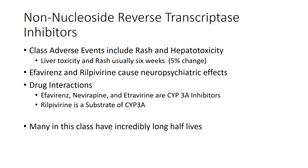As a class, the non-nucleoside reverse transcriptase inhibitors all have class effects including rash and liver toxicity. These usually occur within the first six weeks of starting a medication. Only about 5% of patients will stop the medication because of these toxicities. The rash usually goes away, and if it doesn't, you can treat through it with a topical corticosteroid or sometimes a prednisone taper.